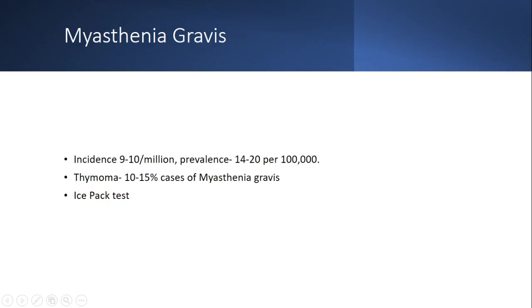Myasthenia gravis incidence is 9 to 10 per million; prevalence is 1,420 per 100,000. Thymoma occurs in 10 to 15% of cases, so we do CT of the chest in all patients. There is variation depending on whether the presentation is generalized or ocular myasthenia gravis, seronegative cases, antibody status, thymoma presence, and age.